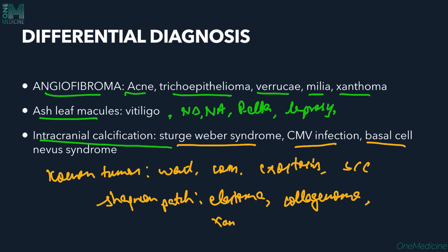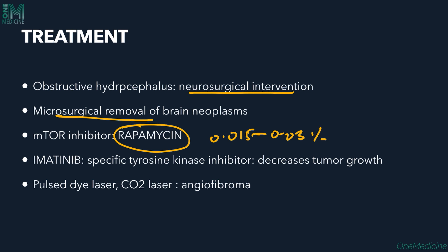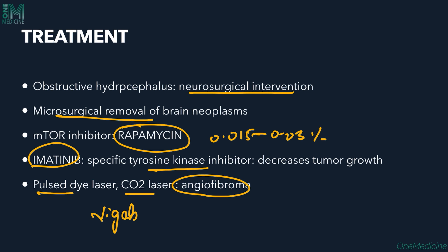Treatment options include neurosurgical opinion and microsurgical removal for obstructive hydrocephalus. Since the mTOR pathway is involved, the mTOR inhibitor rapamycin can be given orally or topically (0.015–0.03%). Imatinib, a tyrosine kinase inhibitor, can also be tried. Pulsed dye laser and CO2 laser are used for angiofibromas. Vigabatrin, an irreversible GABA transaminase inhibitor, is given for seizures.